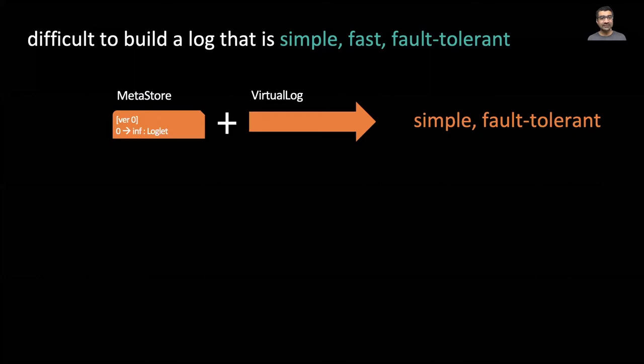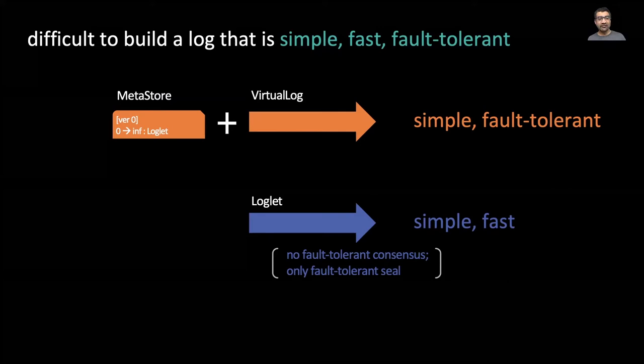We needed a protocol with three properties. It has to be simple, fast, and fault tolerant. It's easy to get any two of these properties, but not all three. With virtual consensus, we divide and conquer. The virtual log in its meta store is simple and fault tolerant, while the loglet itself is simple and fast. The loglet does not implement fault tolerant consensus. A single machine failure can make it unavailable. Instead, it implements a fault tolerant seal. When a loglet becomes unavailable, the virtual log simply seals it and switches to a different loglet.